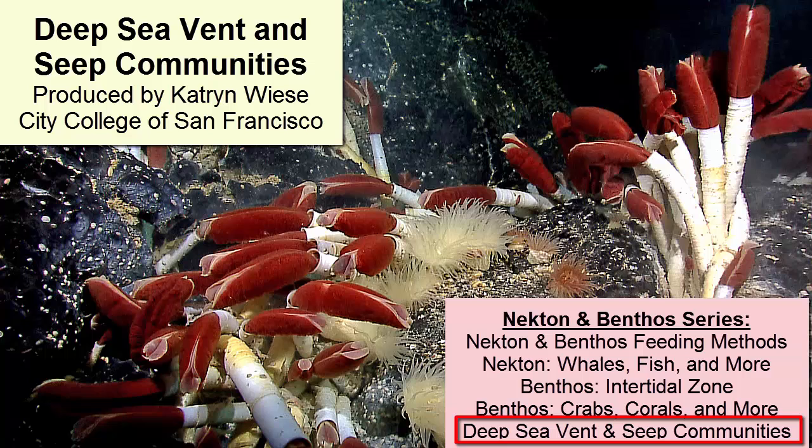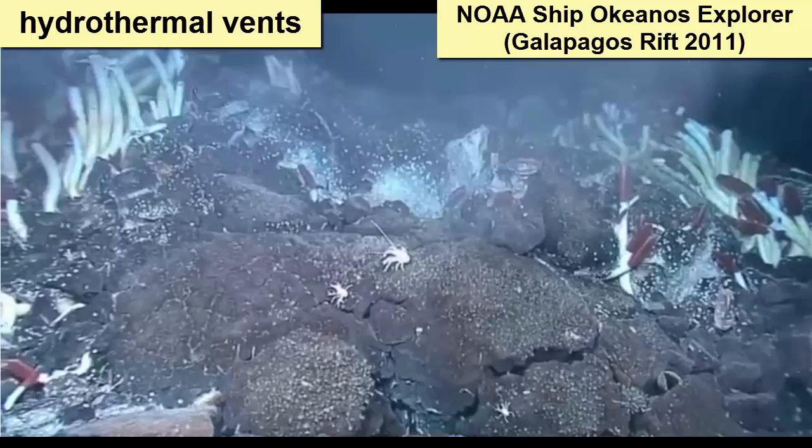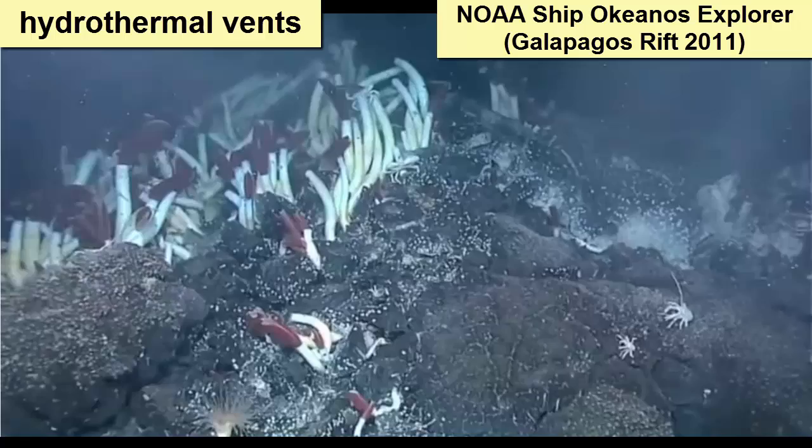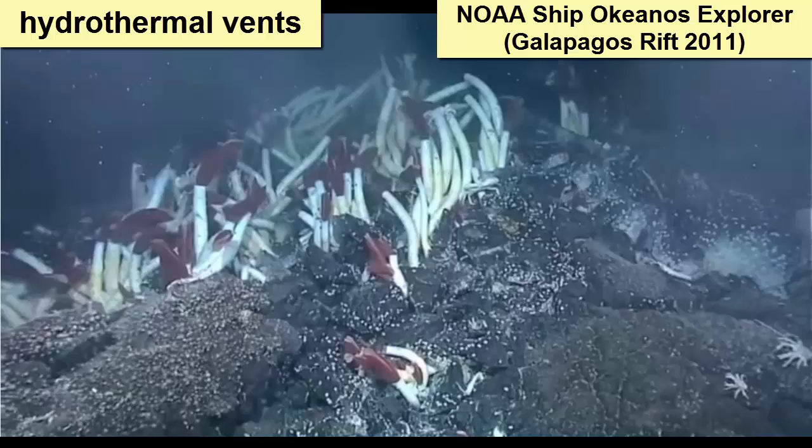To finish up with benthic ecosystems of the oceans, let's review some of the special seep and vent communities that we first discussed at the beginning of the semester when we studied hydrothermal vents and seafloor spreading. These ecosystems are unique because they exist on deep seafloor where there's no light and thus photosynthesis cannot be the energy source that serves as the foundation of the food web. These ecosystems are also like oases, only this time in the darkness of the deep.